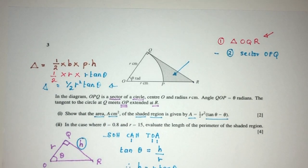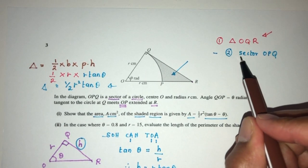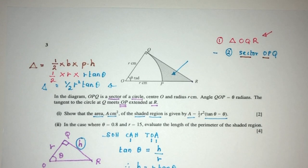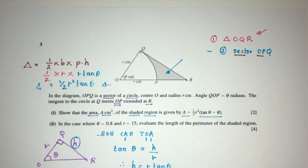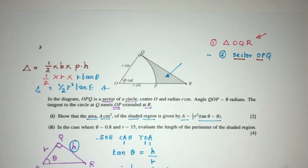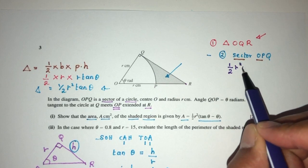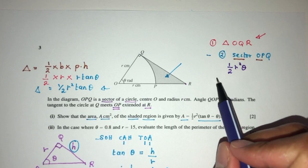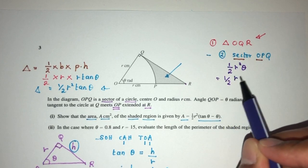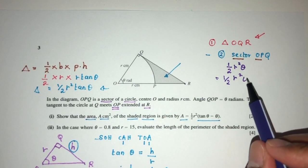This is the area of the triangle OQR. Now for part two of the working, we're trying to find the area of the sector OPQ. This is easy — we need to know the formula for the area of a sector, which is ½R²θ. This formula is only valid in radians. Here the radius is R and the angle is theta exactly.